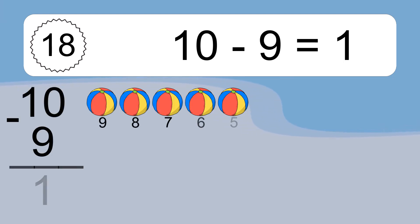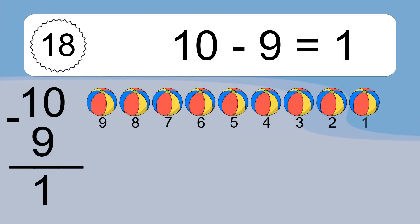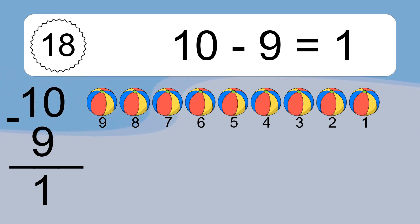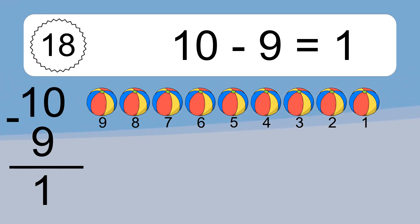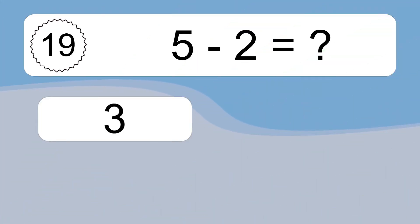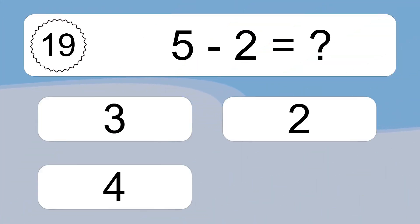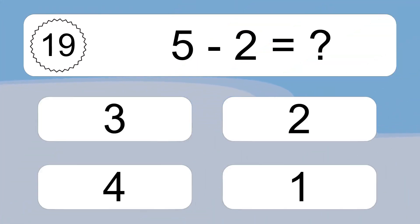10 minus 9 equals 1. Let's count it: 9, 8, 7, 6, 5, 4, 3, 2, 1. 5 minus 2 equals what?